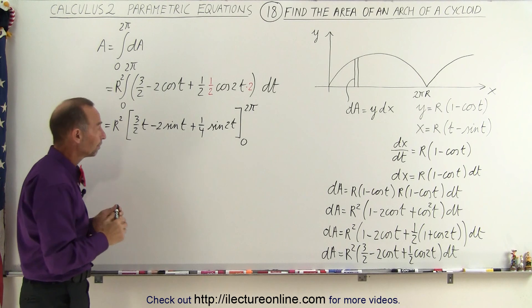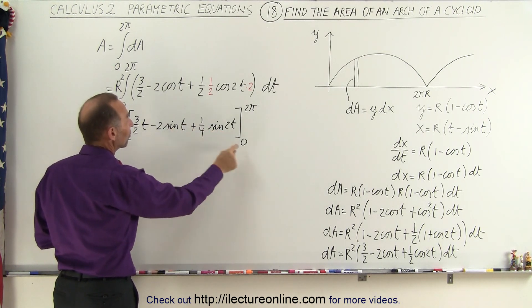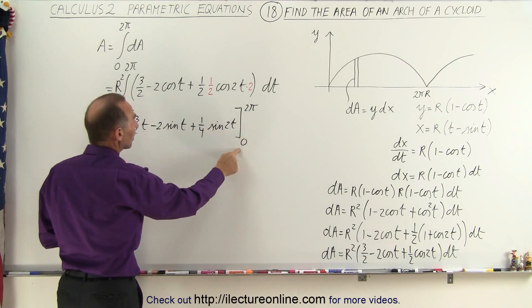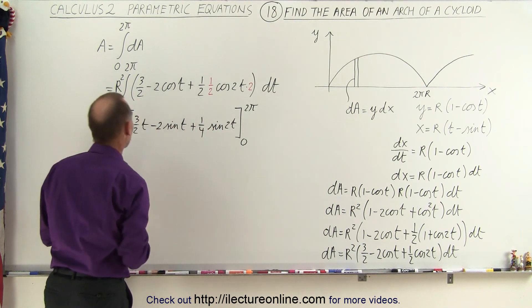Now we're ready to plug in the limits. Notice we have the sine here and we have the sine here. The sine of 0 is 0 and the sine of 2 pi is 0. Same with the sine of 2t. Again we get 0. So these two terms drop out. We only have this term left over.